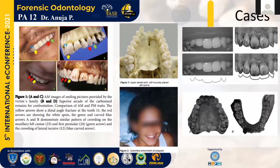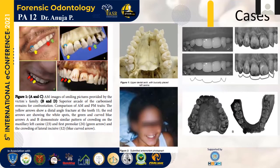Some of the cases solved using smile photography include the first one on the left-hand side, where ante-mortem photographs of a missing individual were compared to post-mortem photographs. The yellow arrow in both photographs indicates that the incisal edge of the central incisor has been chipped off. The blue arrow indicates the position of the lateral incisor on the first quadrant, and the red arrow indicates the position of the lateral incisor on the second quadrant. In images C and D, the red arrows indicate the presence of white spot lesions in both the ante-mortem and post-mortem photographs, and a positive identification was obtained by direct comparison.